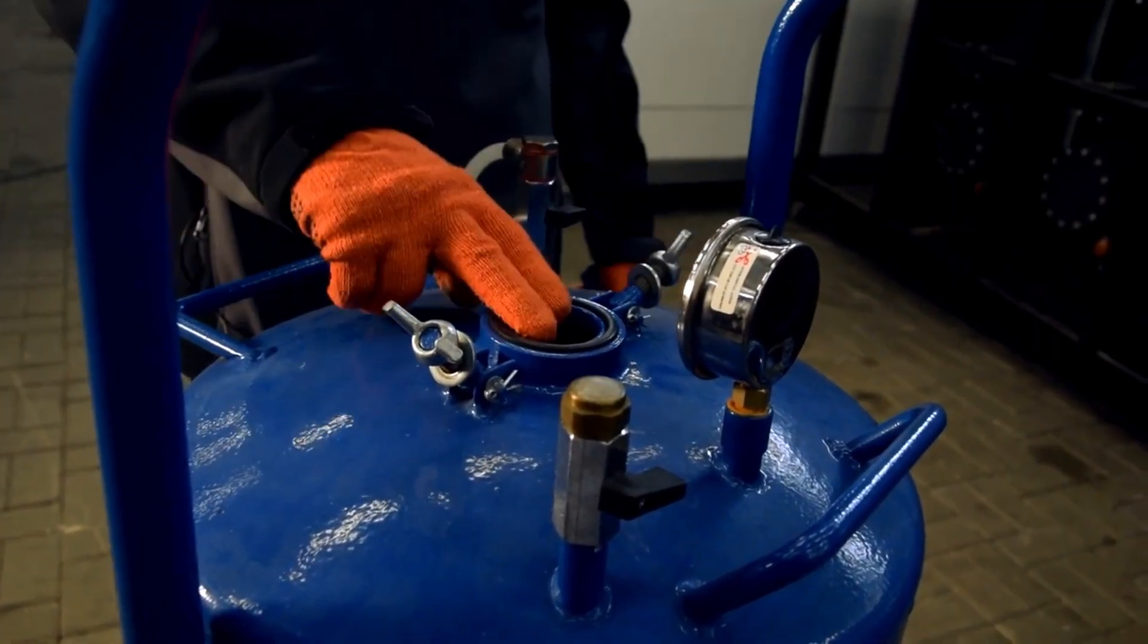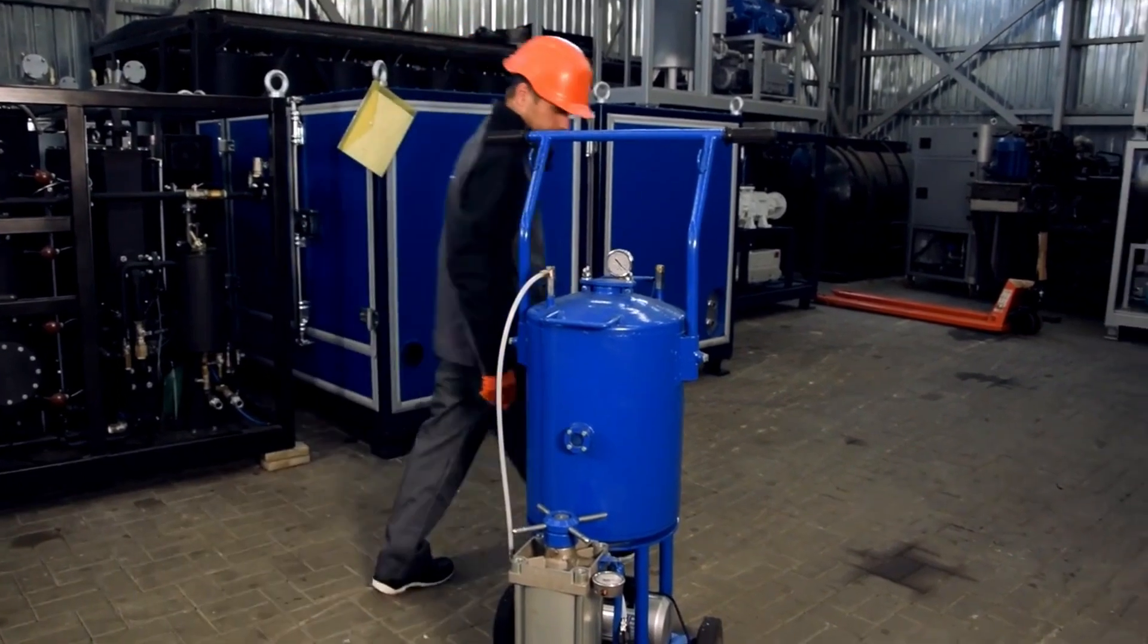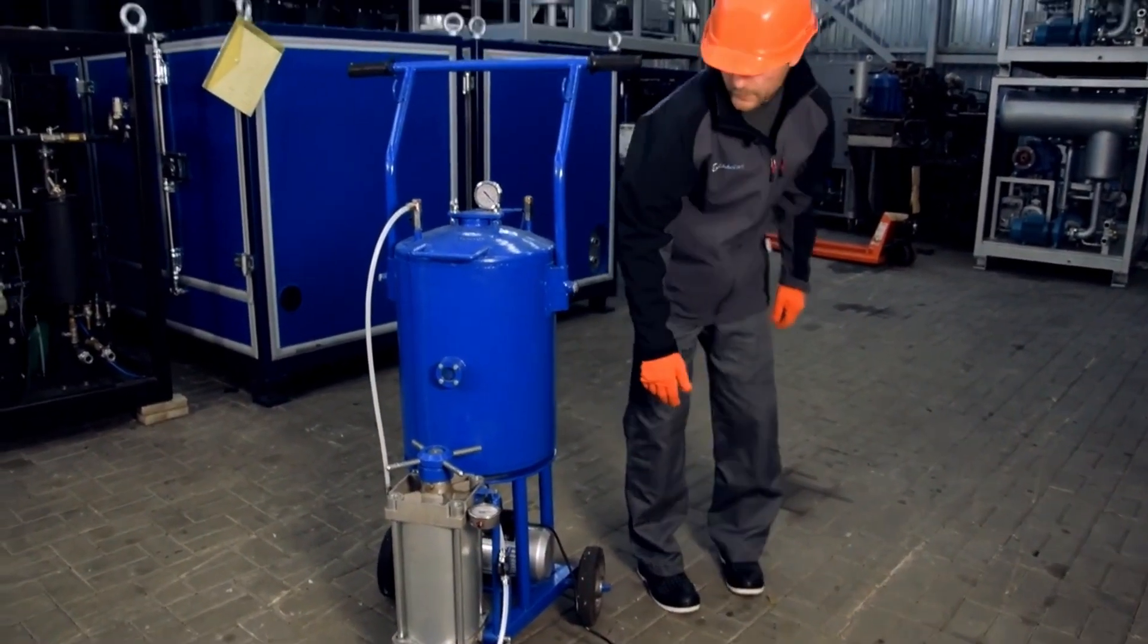The insulating oil is filled in a 30-liter preparation unit through a filler neck. Next, the vacuum pump starts running, and the oil is degassed for 4 hours.